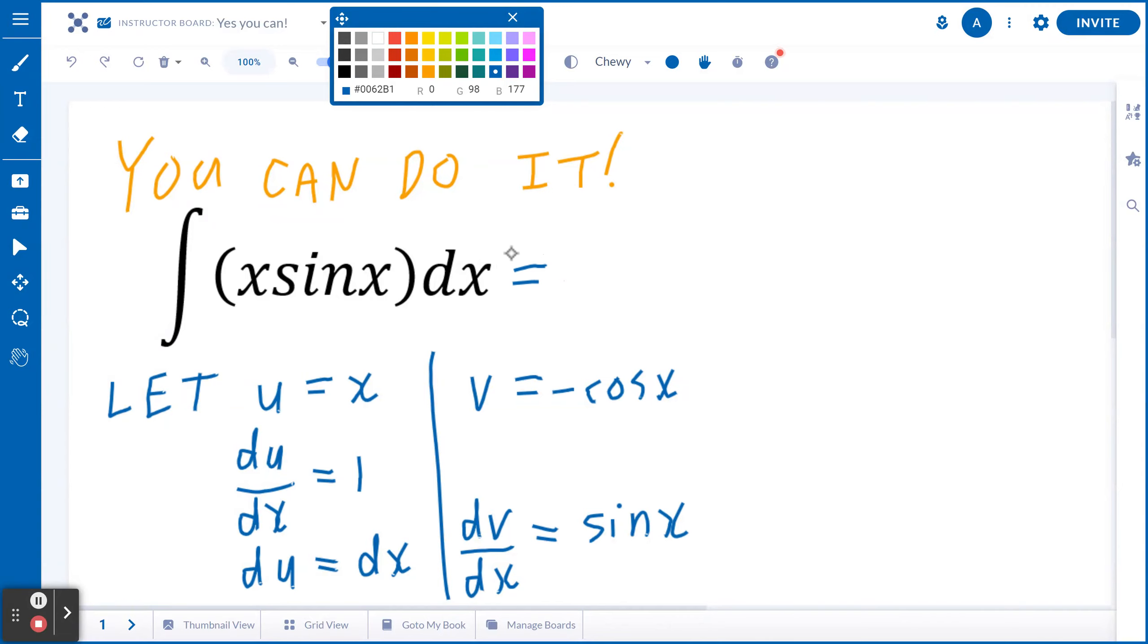So you can express the antiderivative of x times sine x with respect to x in terms of uv, which is basically negative x cosine x minus the antiderivative of v du. So in this case, it's going to be negative cosine x dx.